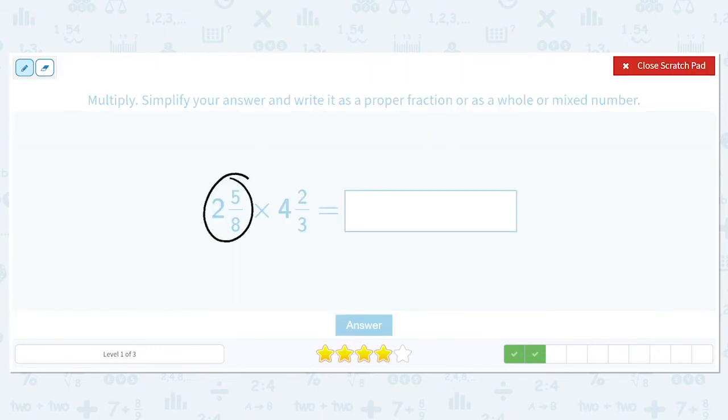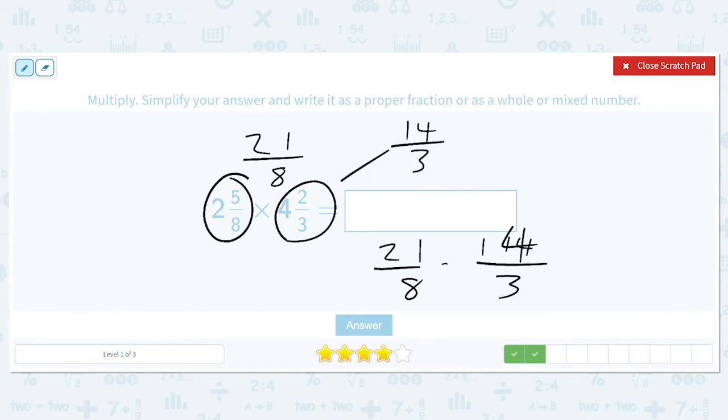Okay, so how about this? 2 and 5 eighths. What's the difference between this one? It's the times, right? So we have 2 and 5 eighths times 4 and 2 thirds. And we have to do the same first steps. So we have 21 over 8, and over here we have 14 over 3. So that's going to give us 21 over 8 times 14 over 3. We don't have to flip. That'll be a 7, this will become a 7 and a 4. So we should get 49 over 4.